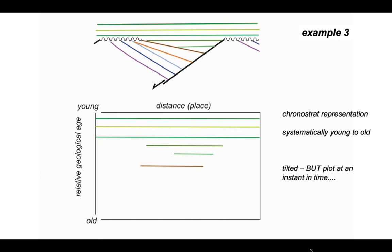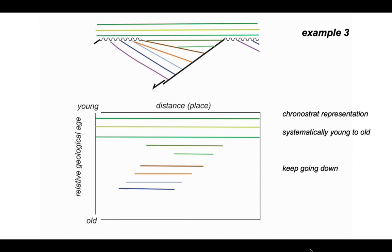Moving down to the brown and orange units: the first brown unit is tilted on the cross-section, but it doesn't matter — we plot it as an instant in time, so it plots as a horizontal line on the chronostrat diagram with its corresponding extent. Similarly with the orange horizon. Continuing down into the blue and purple units, they plot horizontally as well, simply reflecting the lengths seen in the cross-section transferred onto the chronostrat diagram. Even though they're tilted on the cross-section, they plot horizontally because we're plotting their relative geological age.